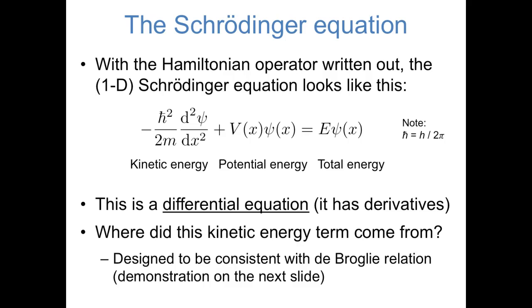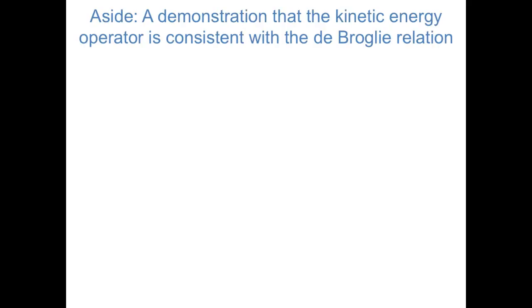We're really not in a position to derive the Schrödinger equation, but since we'll be using the Schrödinger equation so much throughout the course, I want to at least do a little bit to motivate where the Schrödinger equation came from, specifically where this kinetic energy operator, which seems kind of random, came from. So on the next slide, I want to demonstrate that this kinetic energy operator was designed to be consistent with the de Broglie relation.